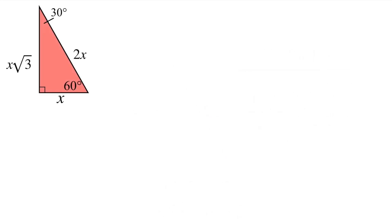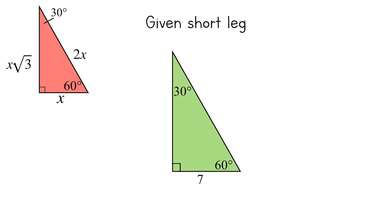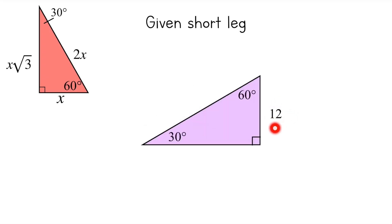The easiest type of problem is when you're given the shorter leg — the leg opposite the 30 degree angle. If the short leg is 7, the hypotenuse is 2 times 7, which is 14, and the longer leg is 7 root 3. If the short leg is 12, the hypotenuse is 24, and the longer leg is 12 root 3.